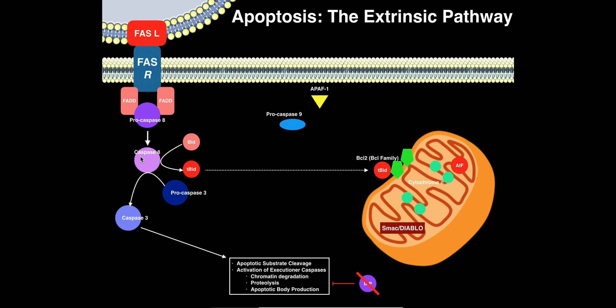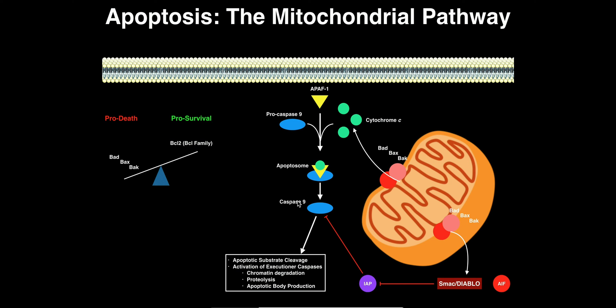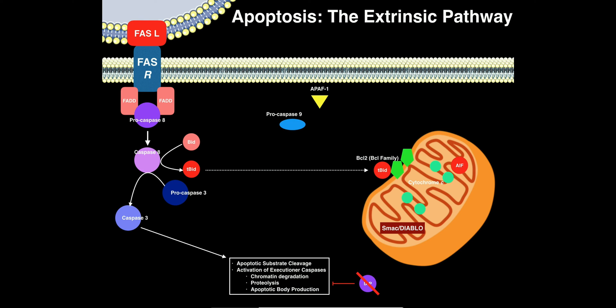Caspase-8 is an initiator caspase, similar to caspase-9 in the mitochondrial pathway. It does not directly trigger the events of apoptosis. Those events include chromatin degradation (destruction of DNA), proteolysis, and production of apoptotic bodies — vesicles that bud off from the membrane of the dying cell containing amino acids, peptides, short oligonucleotides, and simple nucleotides for recycling.